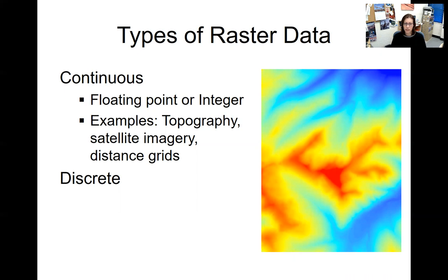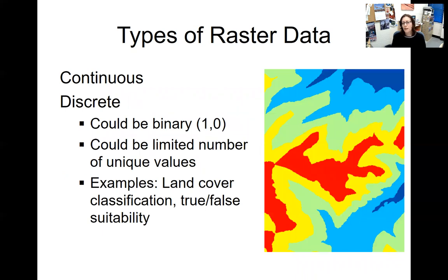Continuous data could also be distance grids — for example, here is my road, and I'm going to create a grid of how far away I am from roads in Massachusetts. That would go from zero, standing in the middle of a road, to whatever the furthest distance from a road in Massachusetts is — which is not as far as you'd think. Discrete data tend to be things that are classified — not necessarily the original measurement of something, but those measurements turned into a map. One common form of discrete data is binary data — zeros and ones.